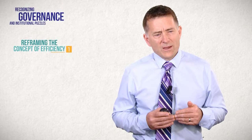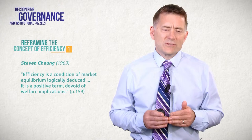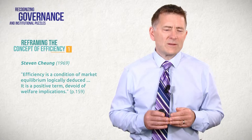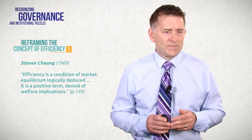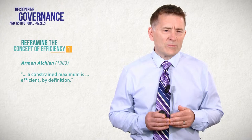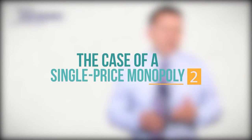Now I'm not the first person to notice this. Steven Cheung in his great book on share tenancy states, efficiency is a condition of market equilibrium, logically deduced. It is a positive term, devoid of welfare implications. And perhaps Armen Alchian put it best when he said, a constrained maximum is efficient by definition.